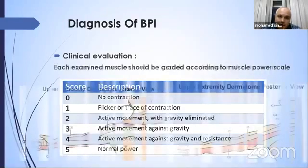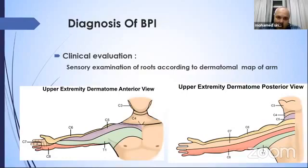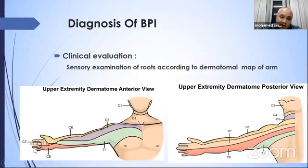The dermatomal map of the arm for sensory roots: C5 is on the top of the shoulder; C6 covers the thumb and lateral part of the forearm; C7 covers the middle finger; C8 covers one and a half fingers and medial part of the forearm; T1 is near the axilla. These are documented in both anterior and posterior views on the chart.